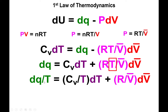Now we have the change in heat divided by temperature equal to the heat capacity at constant volume over temperature times dT, plus R over the molar volume times the change in molar volume. What you can see now is that we have functions where the dT or dV̄ terms are associated with only their corresponding variable — this is known as separation of variables.